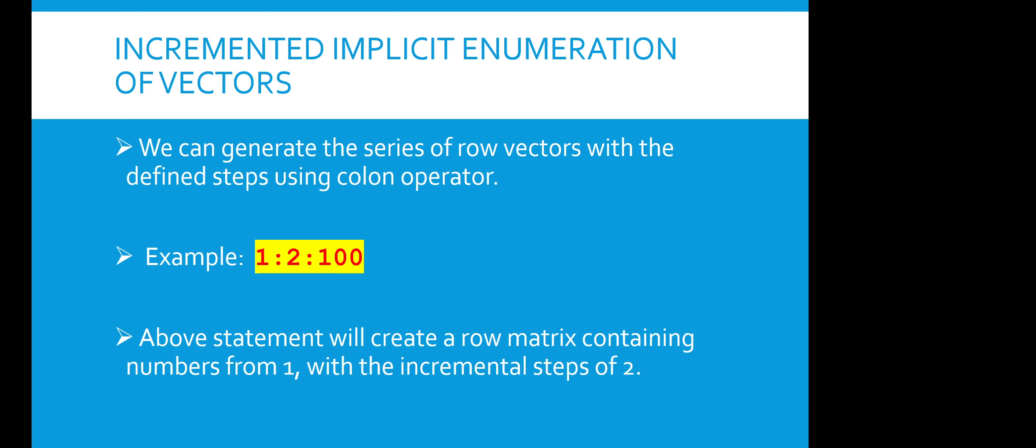Every time we were incrementing only by 1, but here in this case we can specify to MATLAB what should be the incrementation value also, whether it has to be incremented by 2 or incremented by 4 and so on. We have to suggest the incrementation. This is actually incremented implicit enumeration. Here it will start from 1, and the vector will have next values 3, 5, and so on.